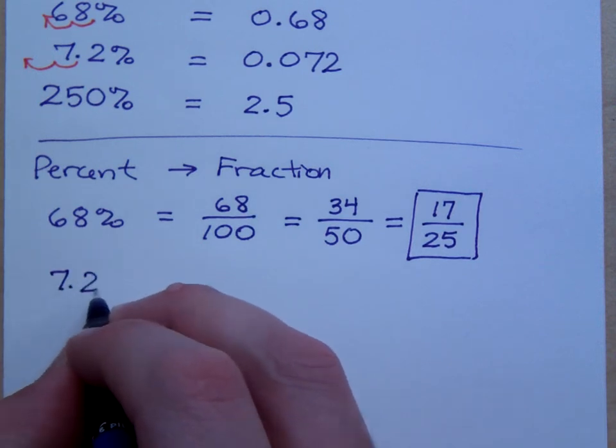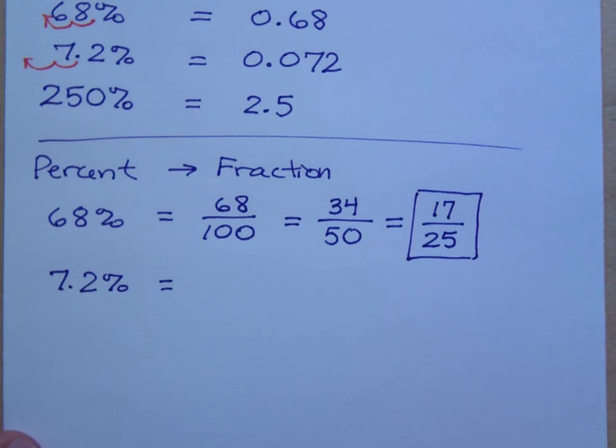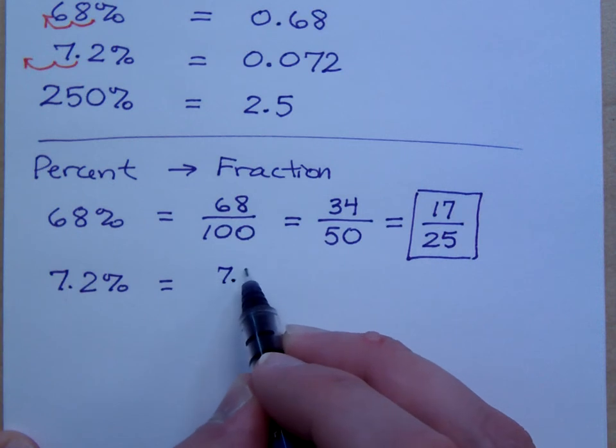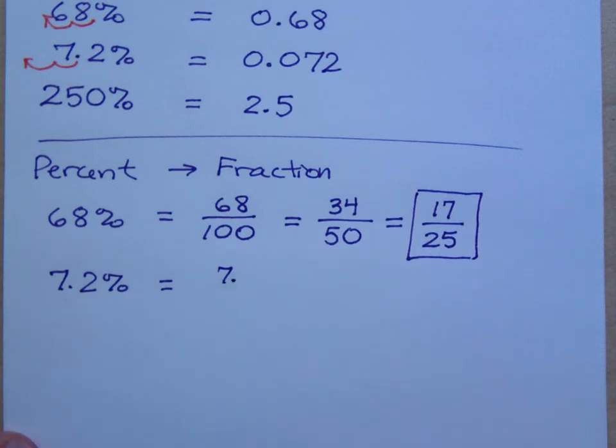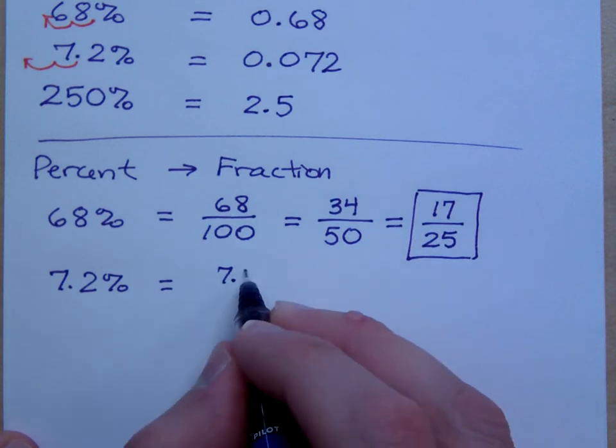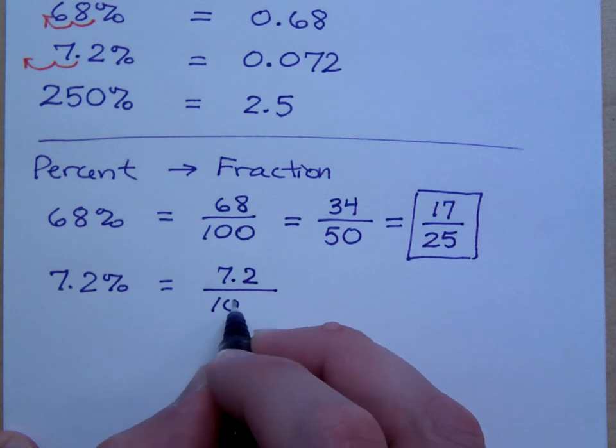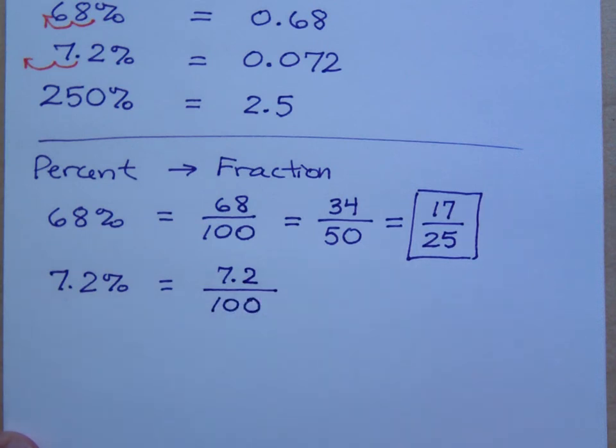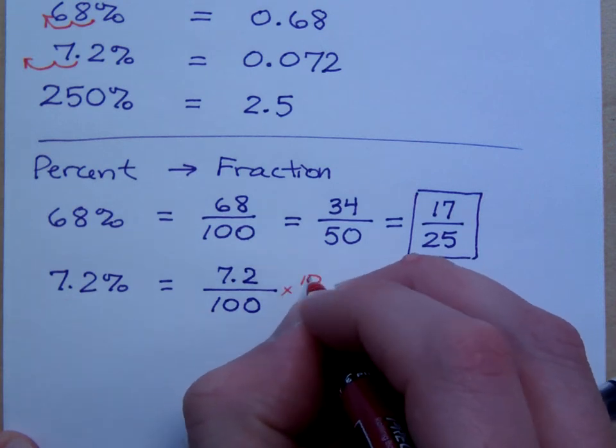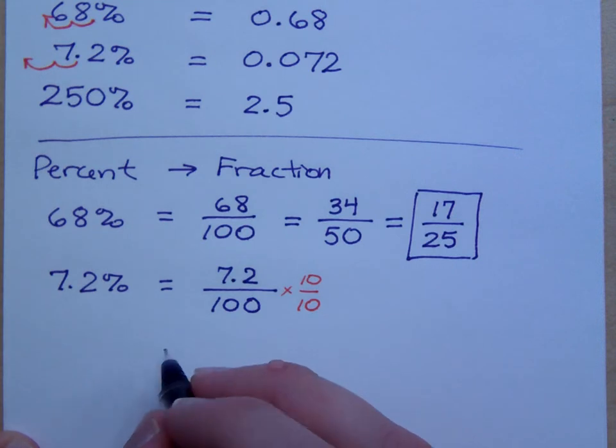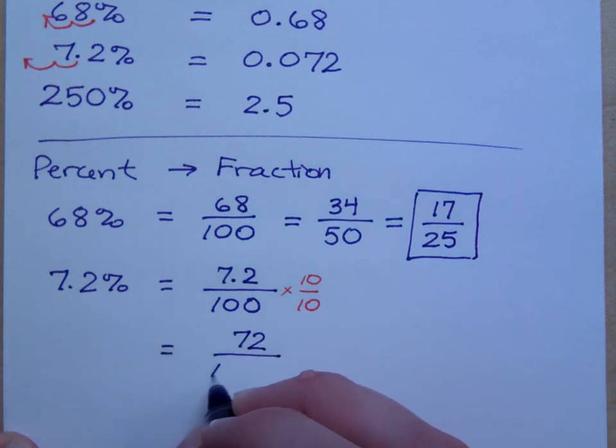What about the 7.2%? This one's going to be a little bit trickier. How would I rewrite that guy? So 7.2 over 100, because that's what it means per 100. Now, I don't like having this decimal up here. So an easy way to fix this is that you can multiply top and bottom times a factor of 10, and that makes this a little bit easier because it makes it a whole number. It makes this 72 over 1,000.